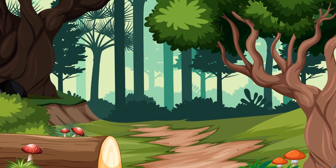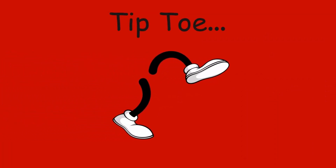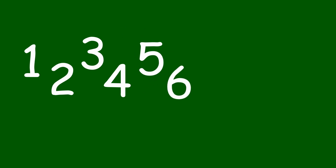We're going on a nature walk, you and me. We're going on a nature walk. What animals will we see? Oh, look. There's a squirrel. Shh. Tiptoe quietly. Let's not wake her up. Tiptoe. Let's count. One, two, three, four, five, six, seven, eight, nine, ten.